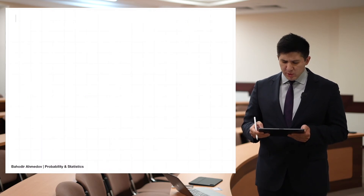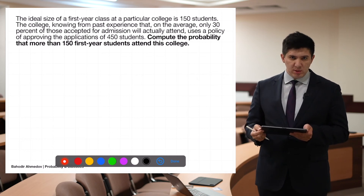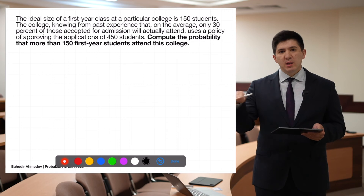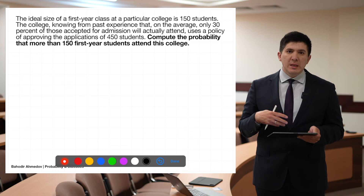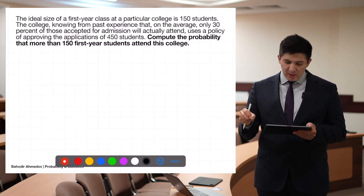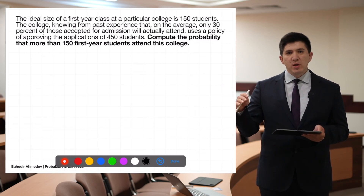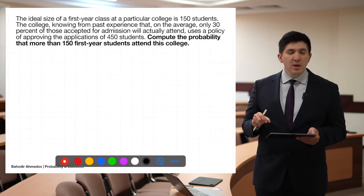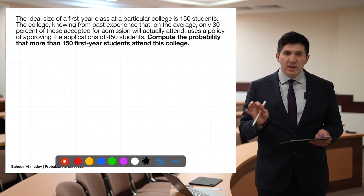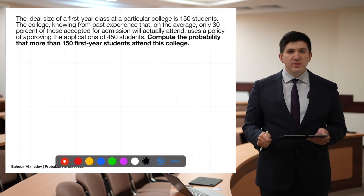The second problem: the ideal first-year class size at a particular college is 150 students. After admissions exams, a cut line is made, but some admitted students may reject the offer. The probability that a student accepts the offer is 30%, so the college sends offers to 450 students. The number who accept is a random variable.